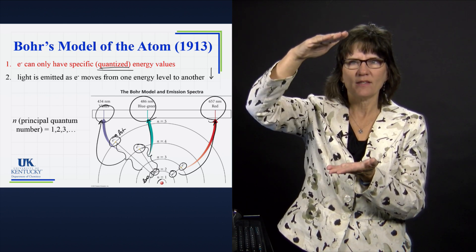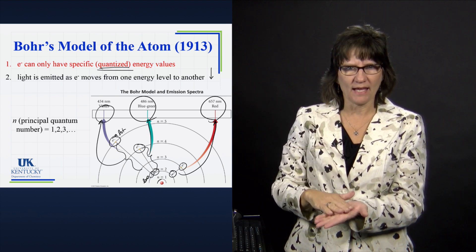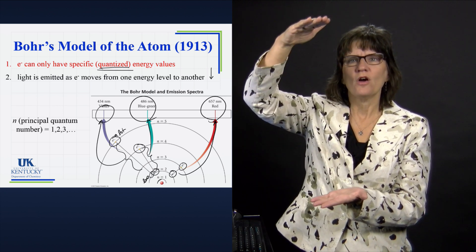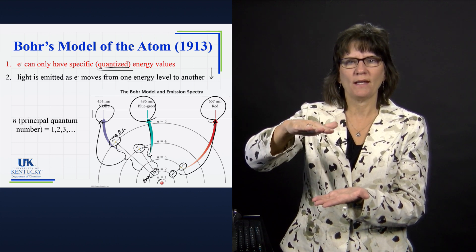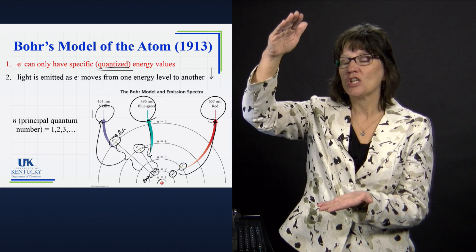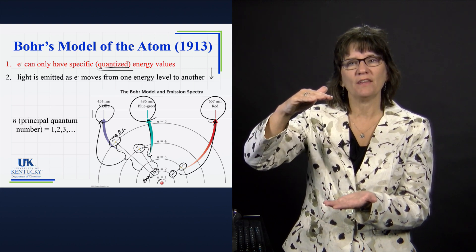The electron is here and he wants to get down to the n equals 1 stage. He can move from one n level to another n level and work its way down to here. Every time it does a jump, it has to get rid of the energy.